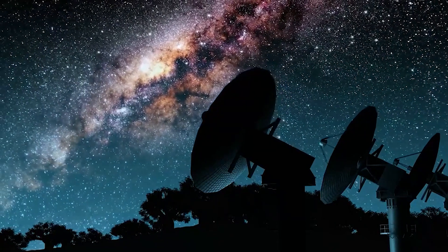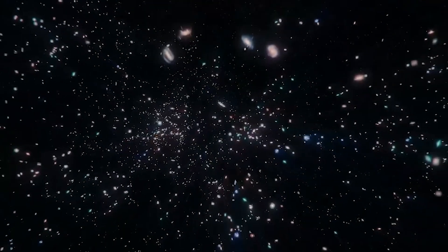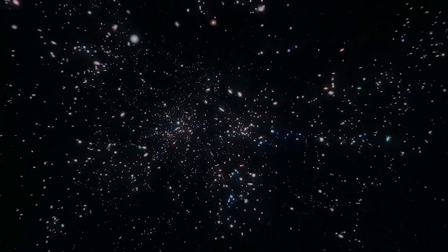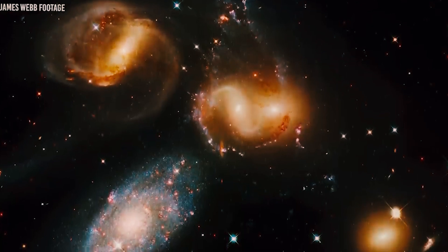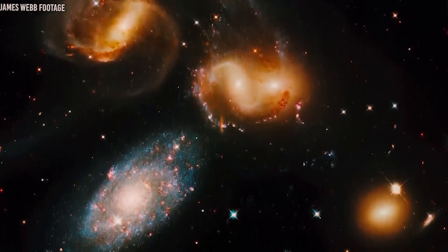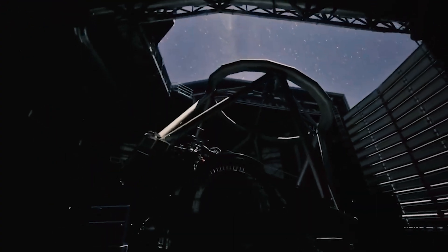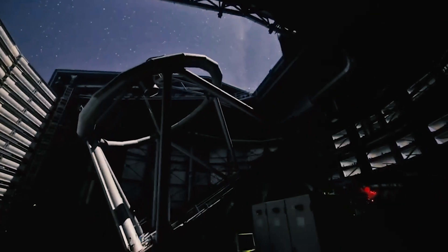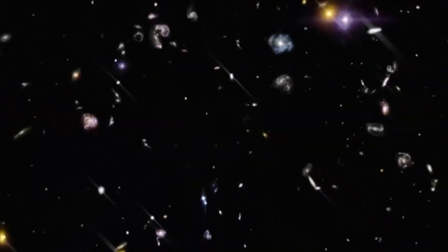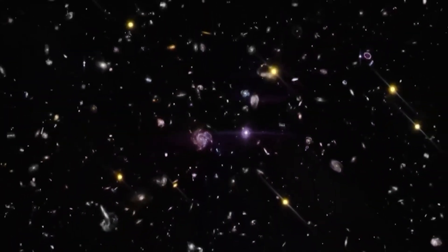Although the James Webb Telescope has previously detected galaxies that are roughly 350 million years old, these newly discovered galaxies were notably larger, with a mass equivalent to tens to hundreds of billions of sun-sized stars, comparable to the Milky Way. This revelation challenges existing cosmological principles and our understanding of the formation of the first galaxies from tiny dust and star clusters.